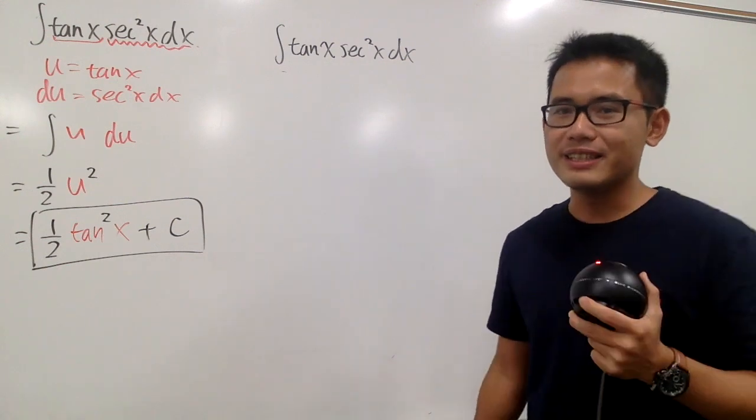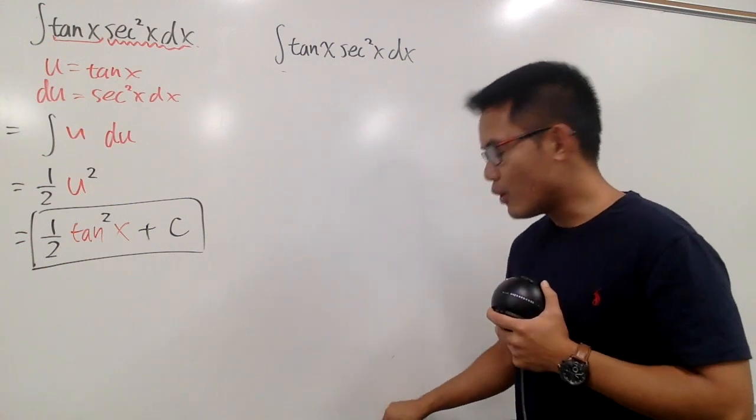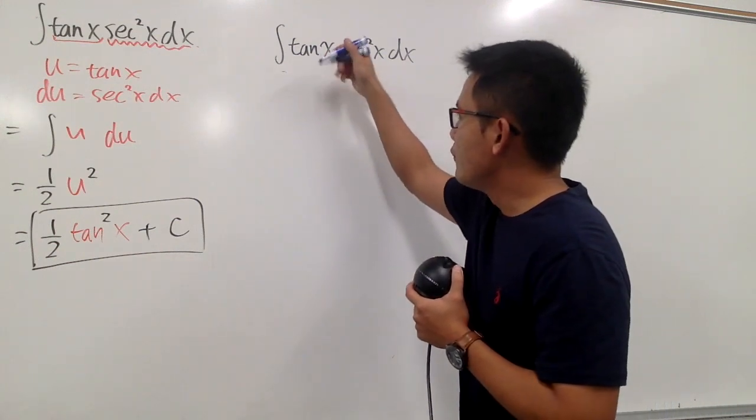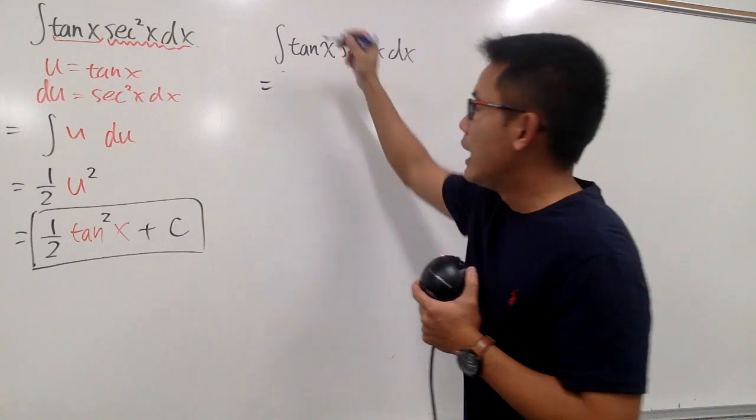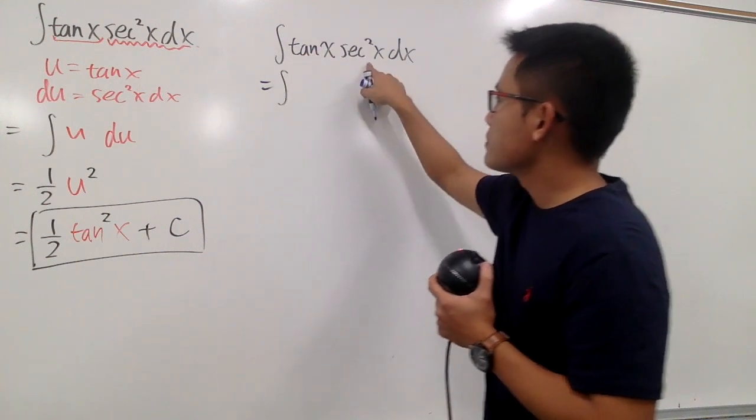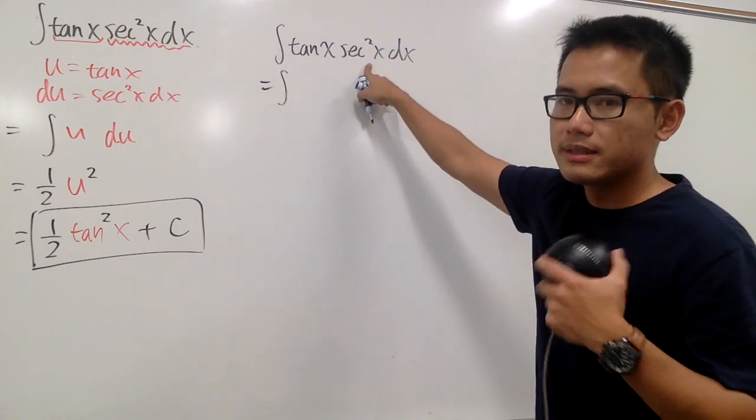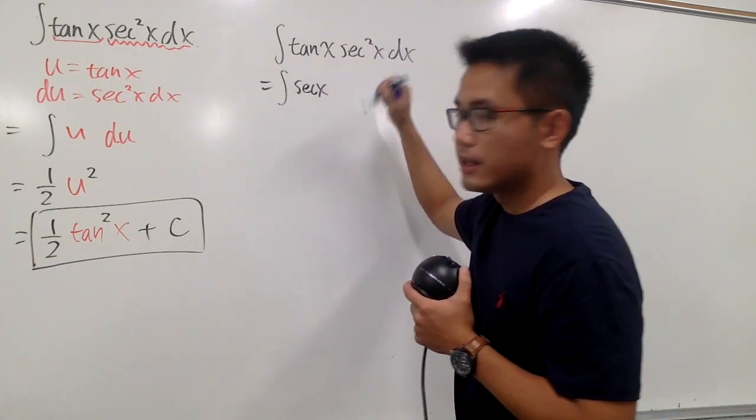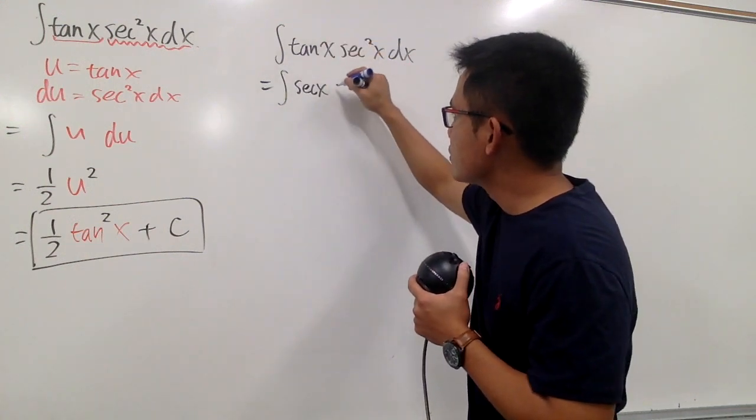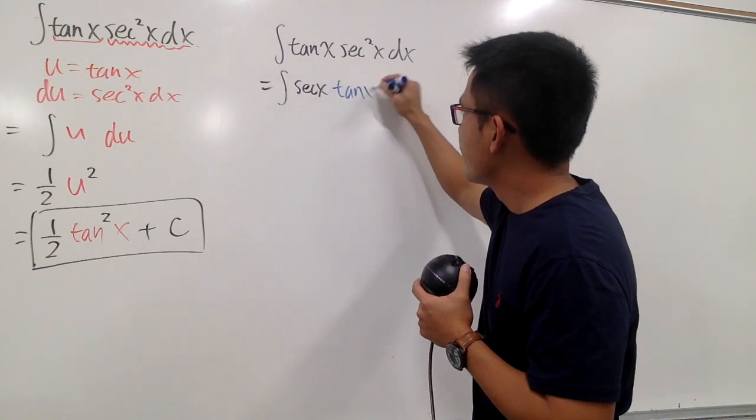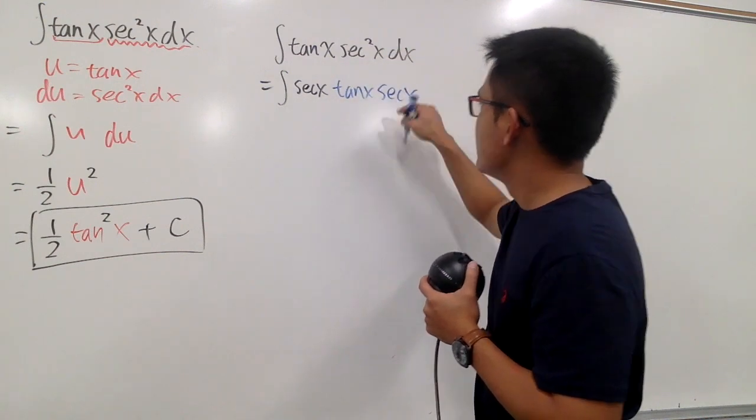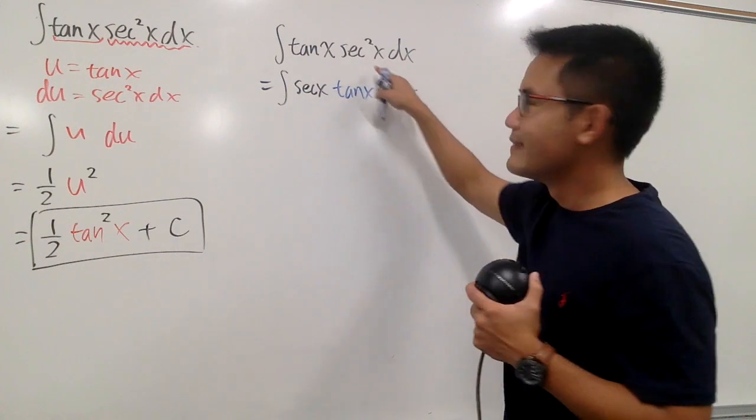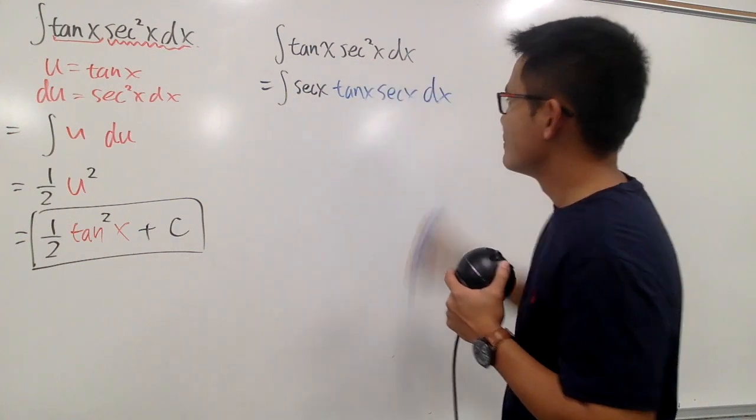So now, this is how I would do it right here. I'm going to first look at this integral as the following. Let me break the secant squared x apart. Let me write it down as secant x first. And then we still have this tangent x. Let me just put that down, and then times another secant x. This secant x times this secant x, we get the secant squared x. And then let me put down the dx right here.